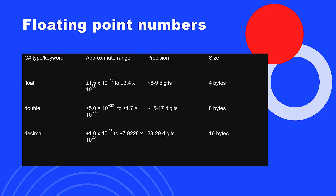The higher the precision, the more bits we actually need to represent that specific floating point number in memory. Here we have three data types used very commonly. The first is float, which requires only 4 bytes — 32 bits — but it only has a precision of about 6 to 9 digits. Then we have double, which requires 8 bytes, so 64 bits, and here we have a higher precision of between 15 and 17 digits. Last but not least, we have the decimal data type that requires 16 bytes but also has the highest precision. The higher the precision, the higher the size we need to allocate in memory.